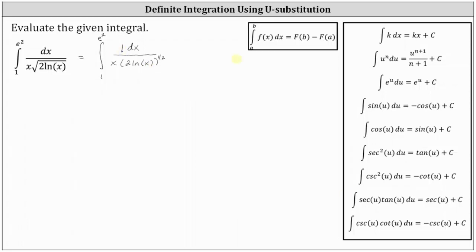So if we let u equal 2 natural log x, we know du is equal to the derivative of 2 natural log x times dx. The derivative of 2 natural log x is equal to 2 times 1 divided by x, which is 2 divided by x, then we have times dx.